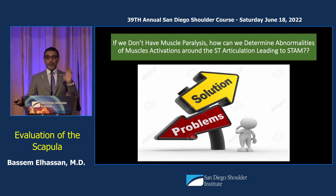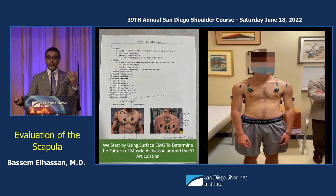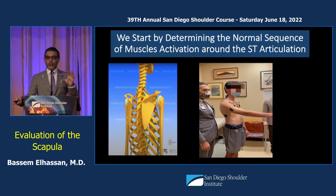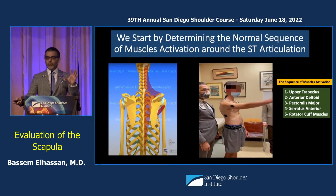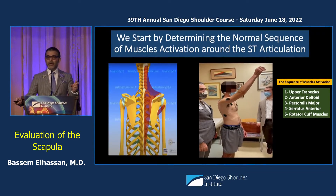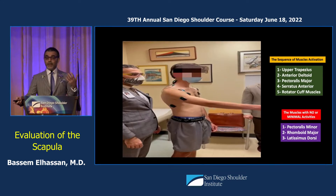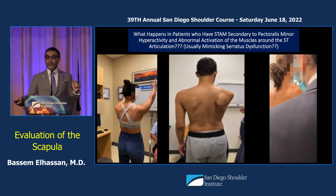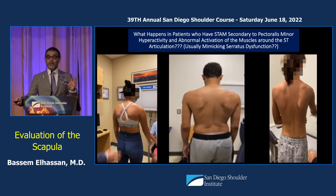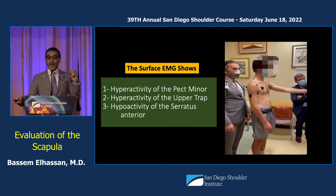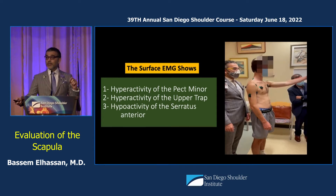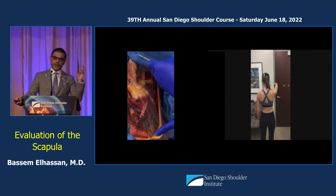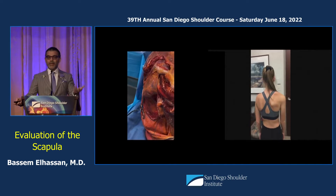What happens if the muscles are abnormal but there is no paralysis? Using surface EMG, we were able to figure it out. During attempted shoulder motion, the trapezius, deltoid, pectoralis, and serratus normally activate, while pect minor, rhomboid major, and latissimus do not. But with abnormality, the pectoralis minor becomes hyperactive, the upper trapezius becomes hyperactive, and the serratus becomes hypoactive. When you see this patient, everyone will say it's medial winging — but how can you differentiate?